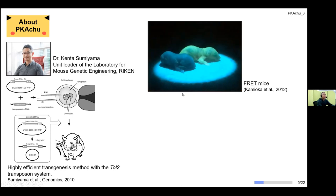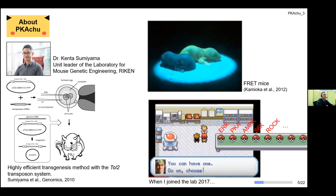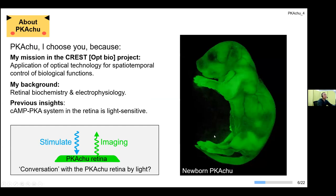After using FRET biosensors in in vitro culture cell systems, he wanted to visualize applications in vivo, and started a collaboration with Dr. Kenta Sumiyama from RIKEN, whose highly efficient transgenesis method enabled generation of many biosensor-expressing mice — what we call FRET mice. The expression level of the sensor is even visible to the naked eye. When I joined the lab in 2017, I could select my partner FRET mice from a large collection. My answer was: of course Pikachu, I choose you. I had background in retinal biochemistry and electrophysiology and wanted to study endogenous retinal photosensitive mechanisms, and I found that the cyclic AMP-PKA system is light sensitive in the retina.